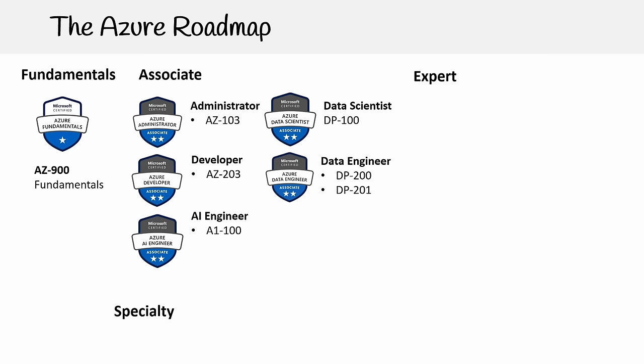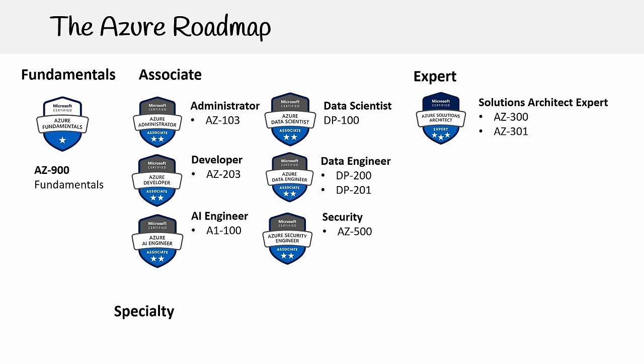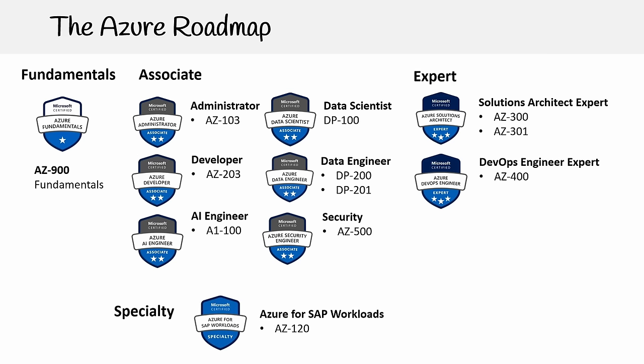Some certifications require you to pass two different exams. So if you want to become a data engineer, you have to pass those two exams. At the expert level, we have the solution architect expert where you have two exams you have to pass, then there's the DevOps engineer expert. And for specialties, we have Azure for SAP workloads and IoT developer.